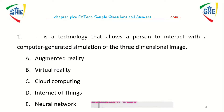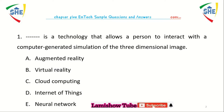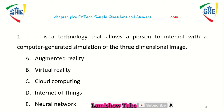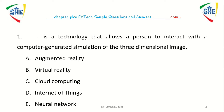Question number 1: Dash is a technology that allows a person to interact with a computer and simulation of a three-dimensional image. A) Augmented reality, B) Virtual reality, C) Cloud computing, D) Internet of things, E) Neural network.